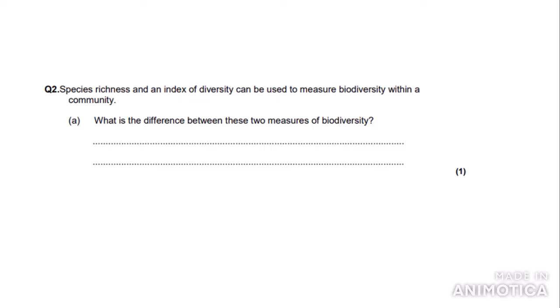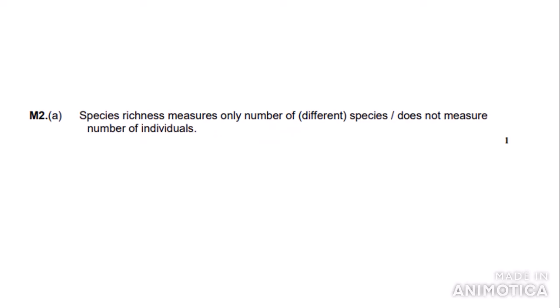The next question ties in with the species and taxonomy section: species richness and an index of diversity can both be used to measure biodiversity within a community — what is the difference between these two measures? As this is a one-mark question, you don't need to write a fact about each measure. Species richness only measures the number of species, whereas the index of diversity also measures the number of individuals as well as the number of species. The mark scheme says species richness measures only the number of different species, or that it does not measure the number of individuals — either answer gets the mark.